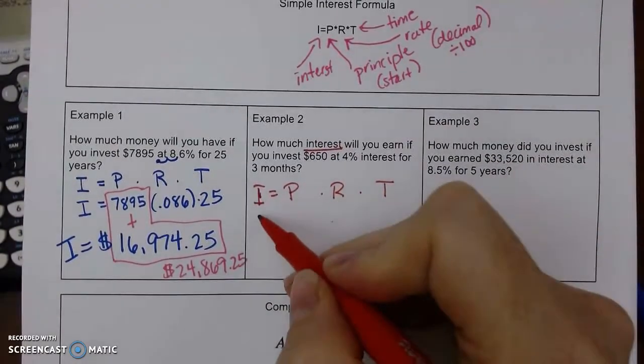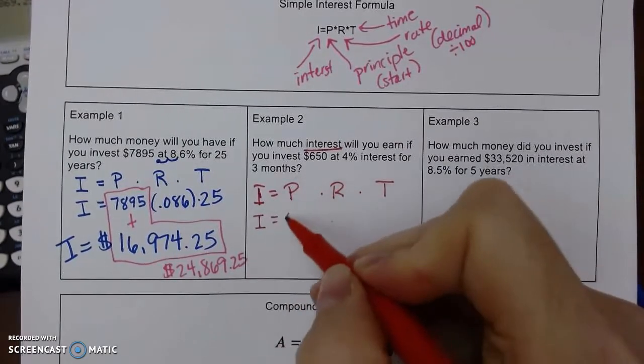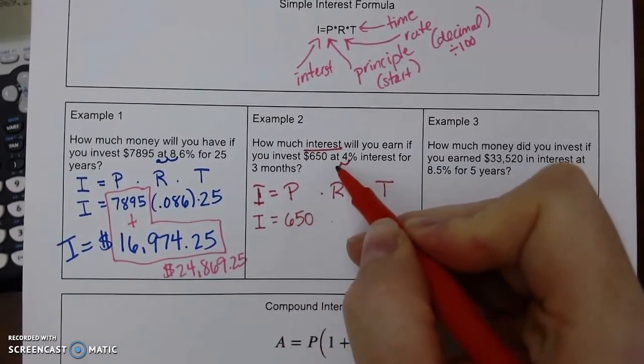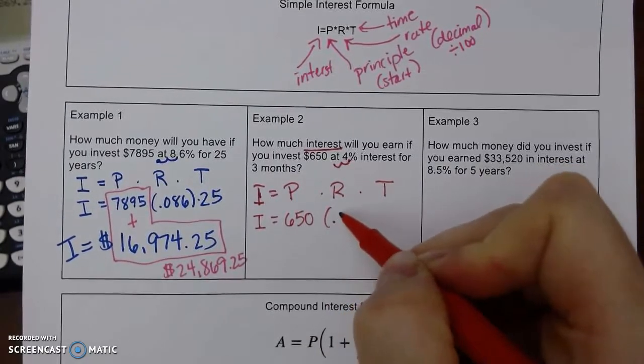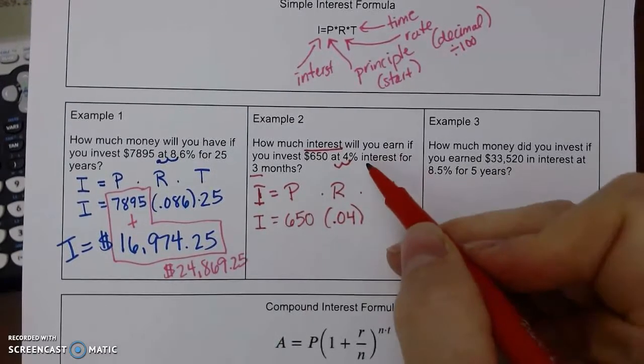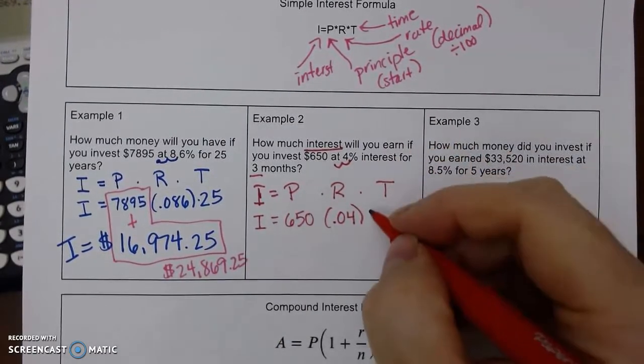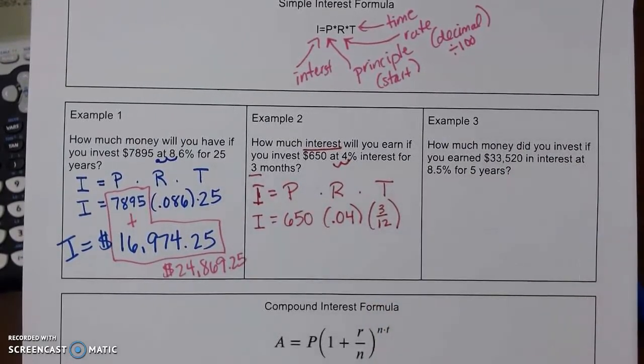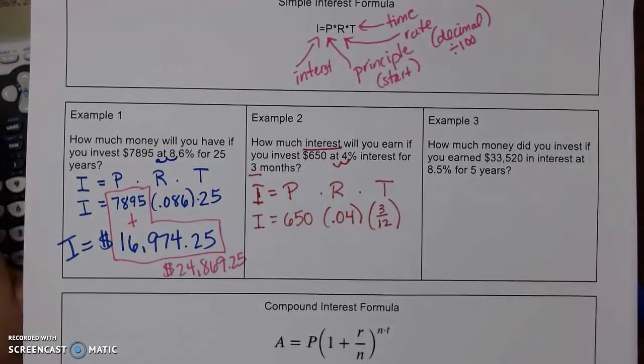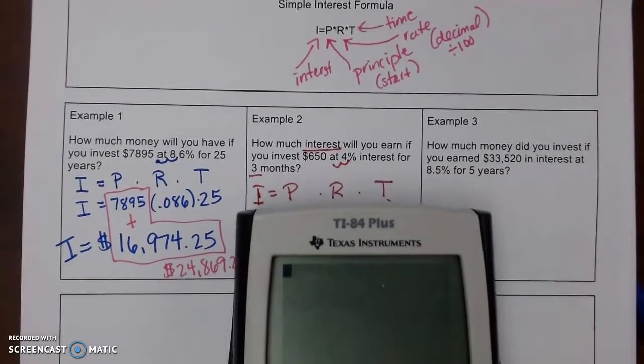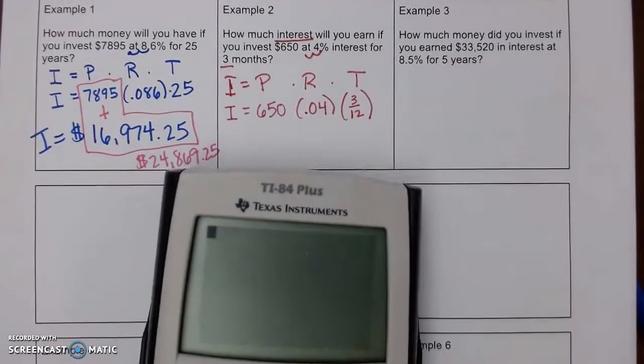Alright, so we've got our principal, our rate. So it starts here divided by 100, so 0.04. And our time, this is three months, and our interest rate is a yearly interest rate. So we can always do three divided by 12 months. If you knew that what that was in a decimal, you're welcome to use that as well. And we can just literally type it straight in. So I'm going to move this up.